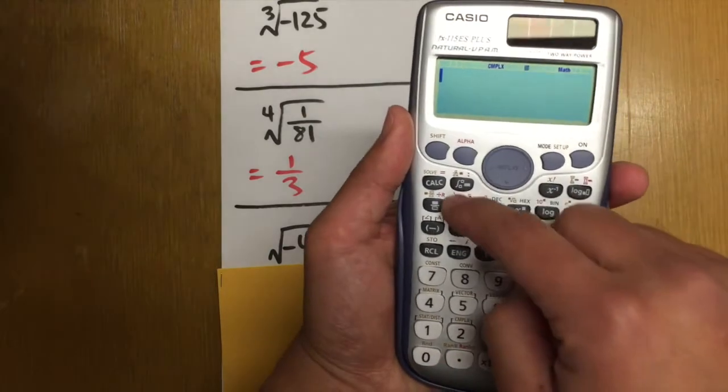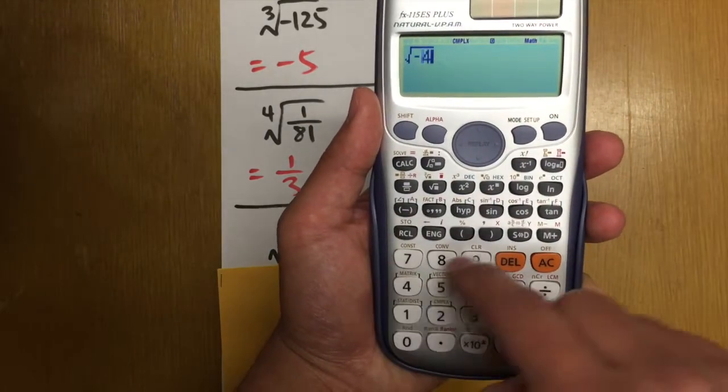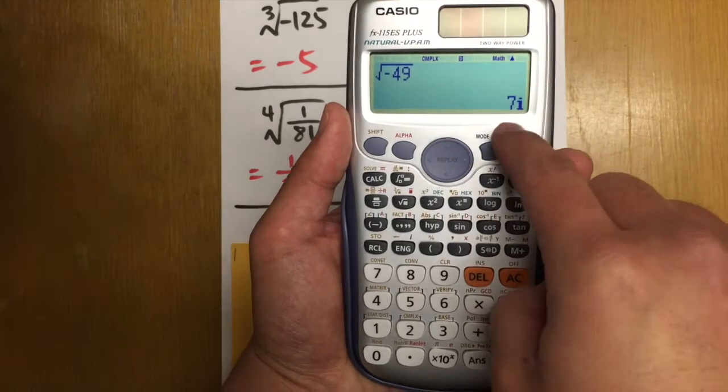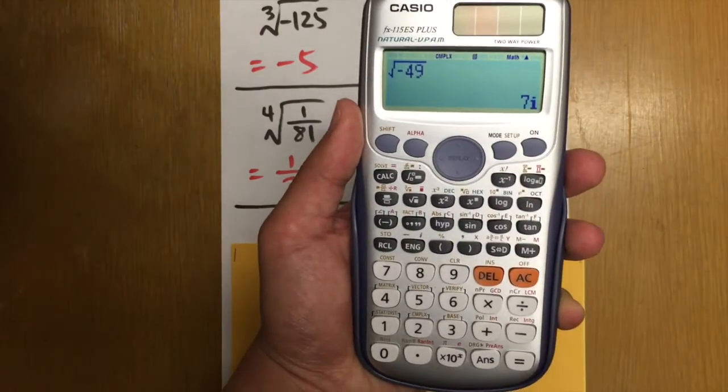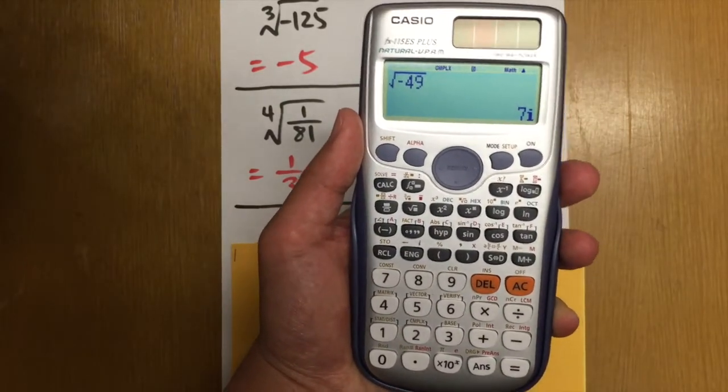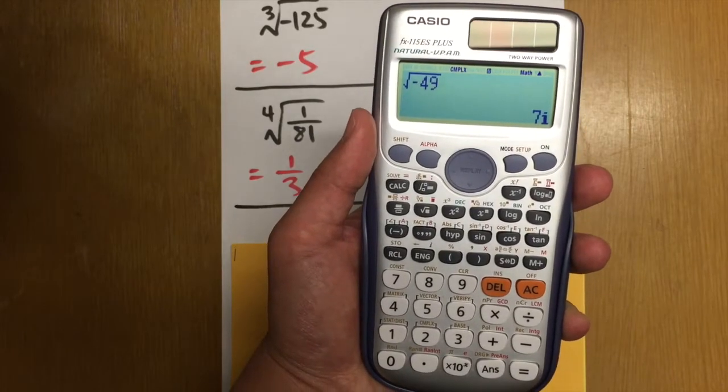And now we are able to do anything with complex numbers. So let me enter square root of negative 49. And you see the calculator will give you the answer 7i. Okay? So it depends on if you are going to use complex number for the answer or not.